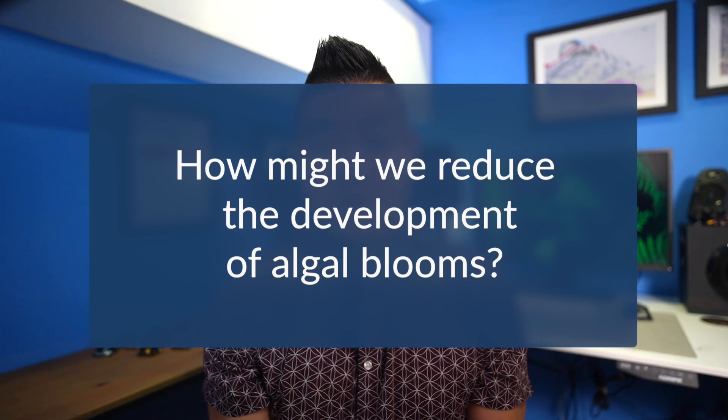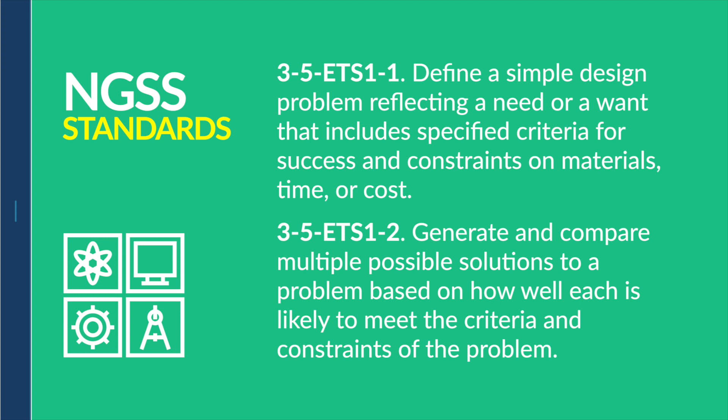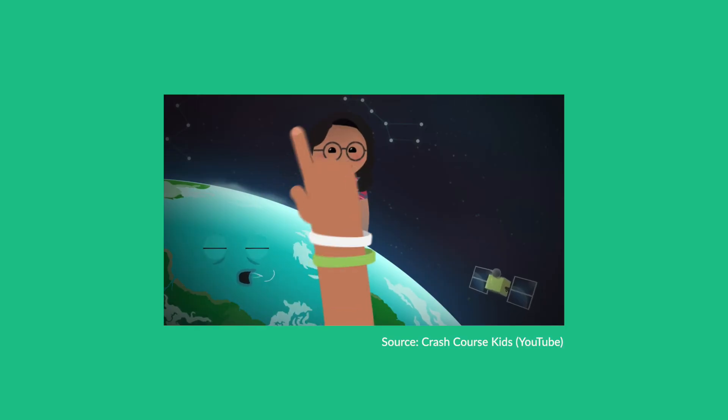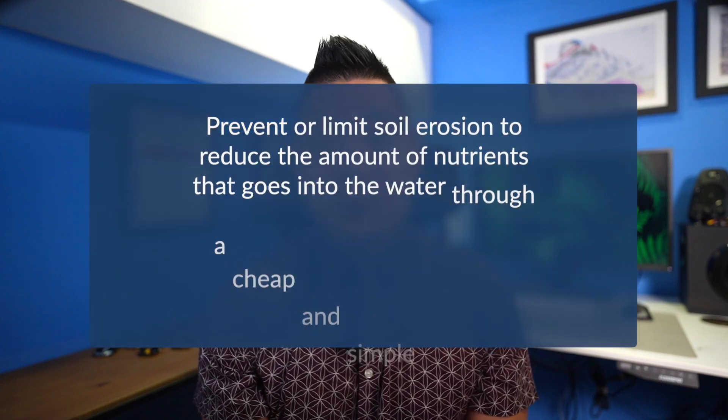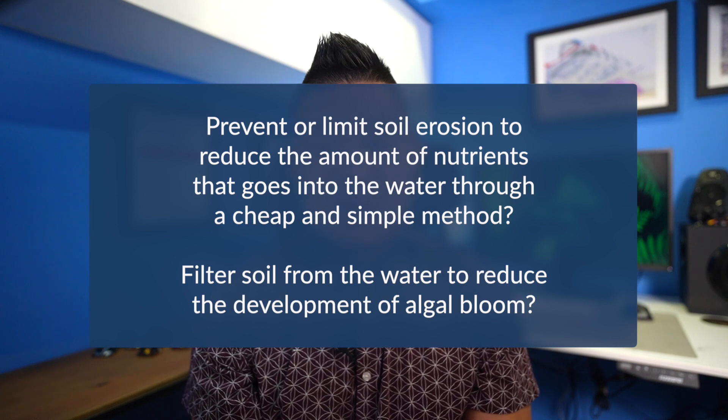We wanted students to apply what they learned in a meaningful way by asking: how might we reduce the development of algal bloom? This involved specific engineering standards. The context for this engineering project was farming areas next to bodies of water like a river, where rainfall causes nutrient-rich soil to erode from the farmland into the river. The performance task involved students identifying the problem, the cause, the success criteria, and the constraints. I recommend having students check out the Crash Course Kids playlist on the role of an engineer and how to define the problem and success criteria. Through this process, students came up with 'how might we' problem statements.